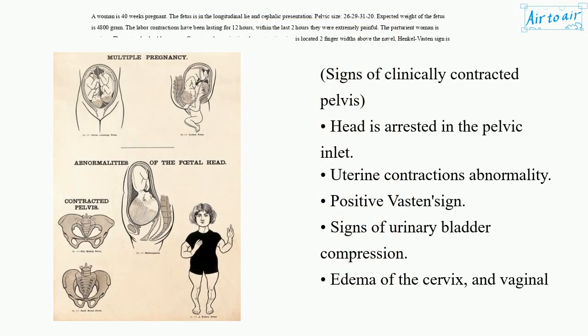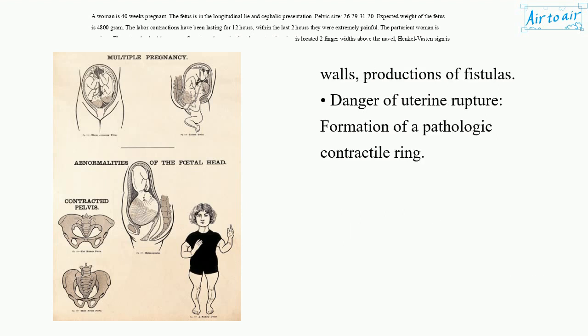Signs of clinically contracted pelvis: head is arrested in the pelvic inlet; uterine contractions abnormality; positive Vasten sign; signs of urinary bladder compression; edema of the cervix and vaginal walls; production of fistulas; danger of uterine rupture; and formation of a pathologic contractile ring.